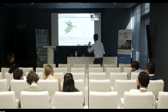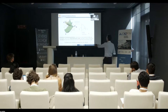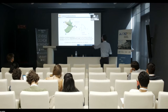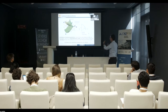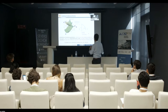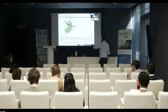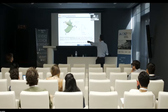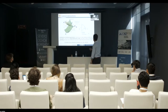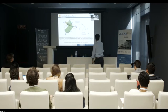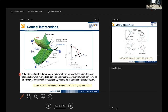Conical intersections are multi-dimensional features on the potential energy surface where two electronic levels become degenerate — they share the same energy value. The wave packet can pass through the conical intersection and reach what is called the photo-product. These are like doorways through which the molecule can pass from one electronic state to another.